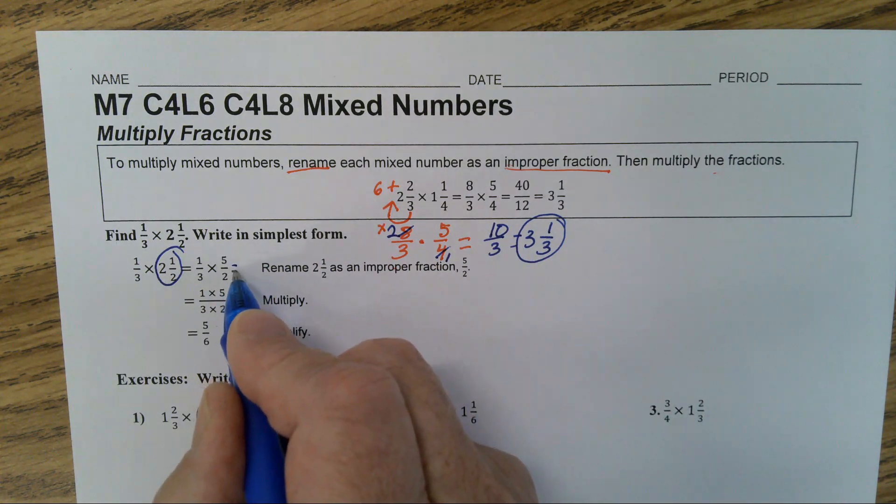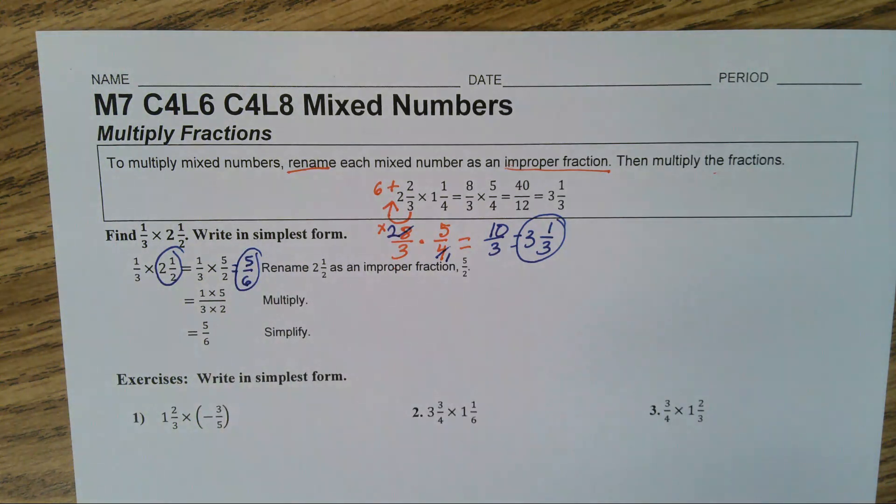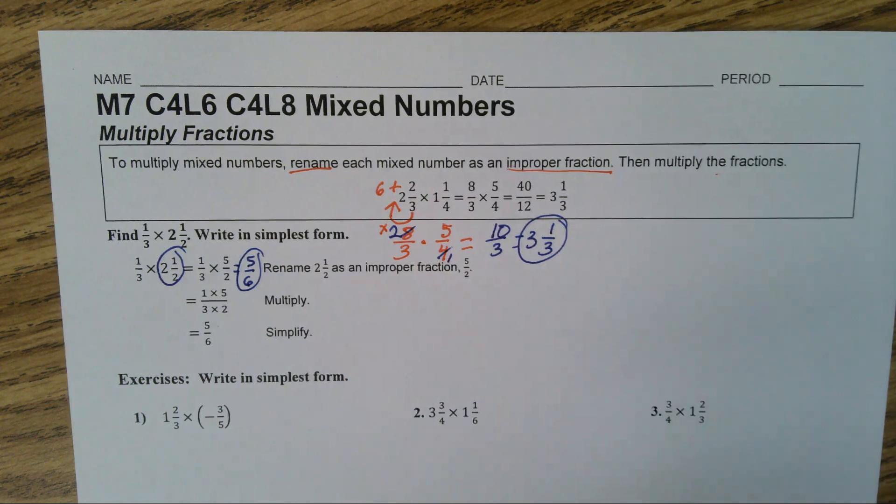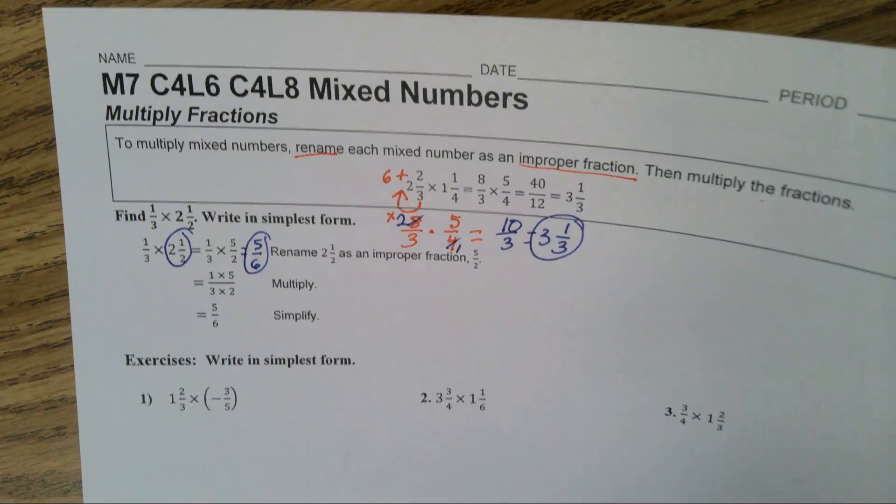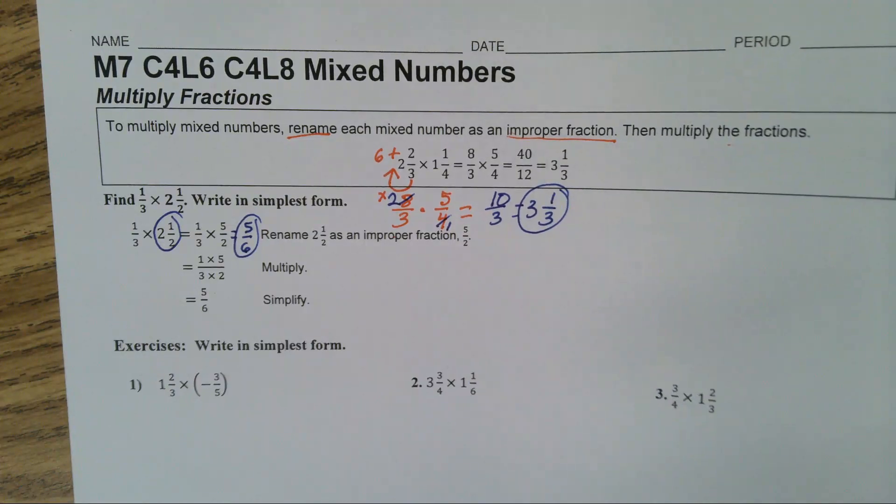1 times 5 is 5. 3 times 2 is 6. And that's your final answer. Now in a little bit you're going to do these problems. But I want to go ahead and explain how to do the division.